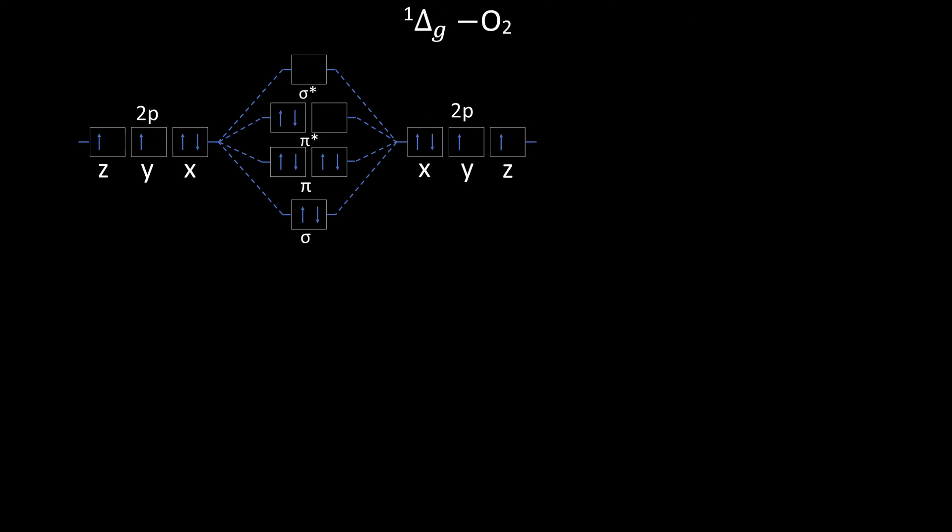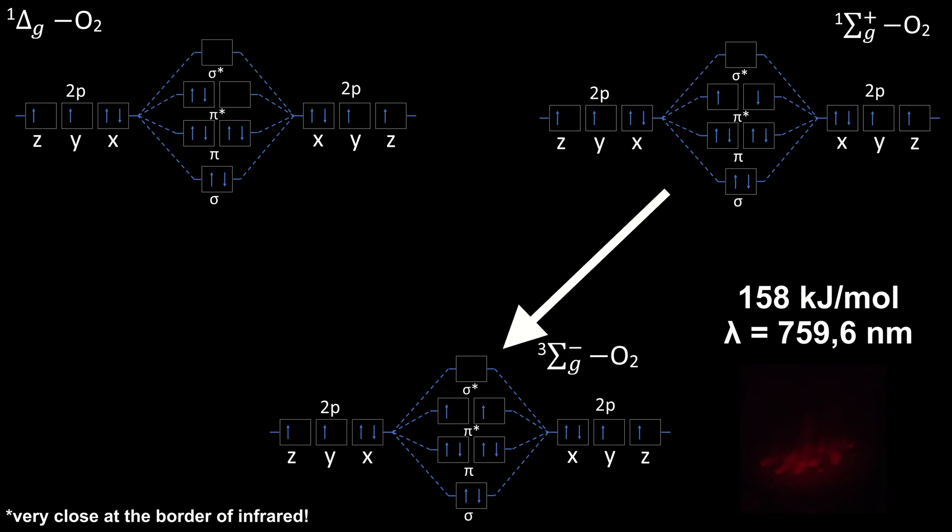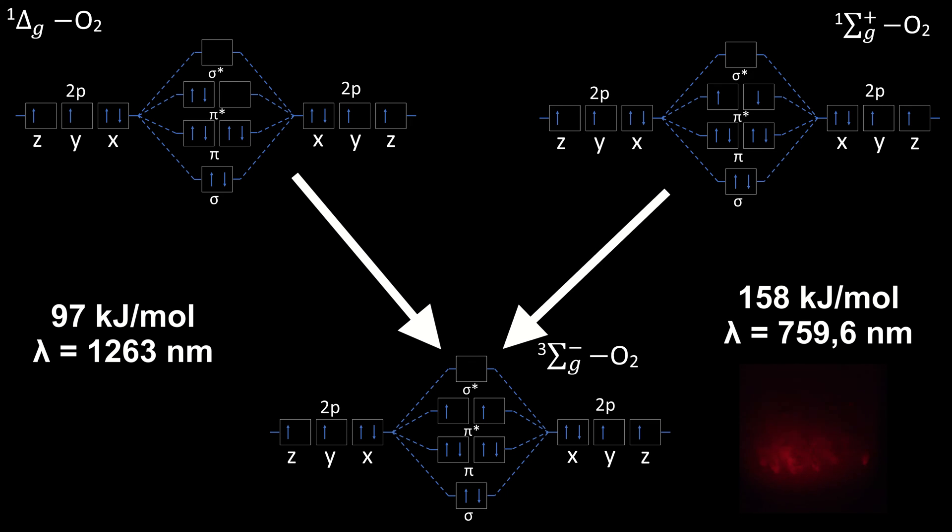When oxygen falls back from the singlet state with higher energy into the ground state, around 158 kJ per mole of energy are released in the form of light, which has a wavelength of 1,263 nanometers and is in the far infrared range, so it is not visible to the naked eye.